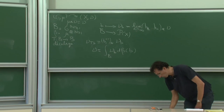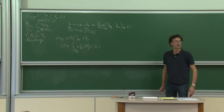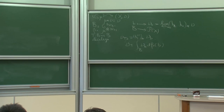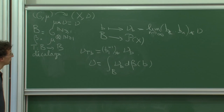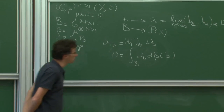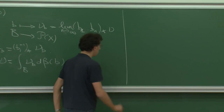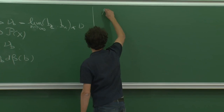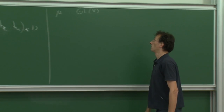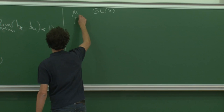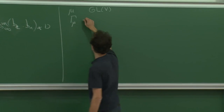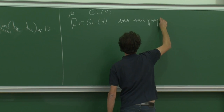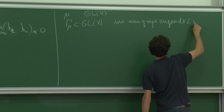J'ai donné des applications de cette construction dans le cadre des marches aléatoires sur les groupes linéaires. Je me suis intéressé au cas où mu est une mesure de probabilité sur GLV, où V est un espace vectoriel réel de dimension finie. J'ai noté gamma_mu le sous-semi-groupe engendré par le support de mu.